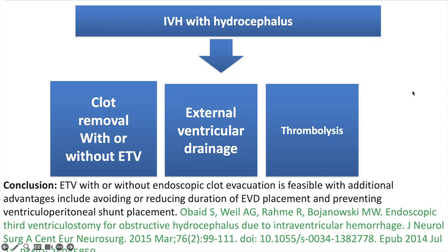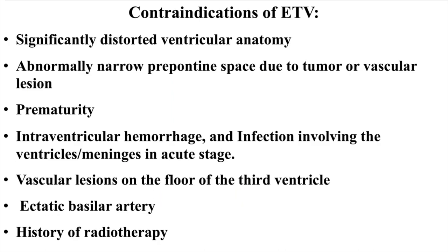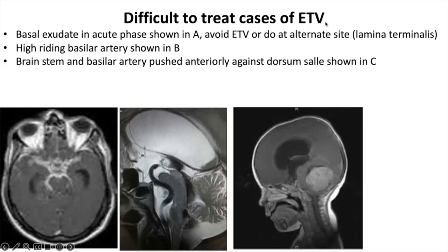Other options include EVD and thrombolysis. ETV can also be performed in NPH when the third ventricle floor or anterior wall is bulging. Contraindications include significantly distorted ventricular anatomy, abnormally narrow prepontine space due to a tumor or other lesion, premature infants, and post-hemorrhagic and post-infective hydrocephalus. These are difficult-to-treat cases, especially at the beginning of the learning curve.